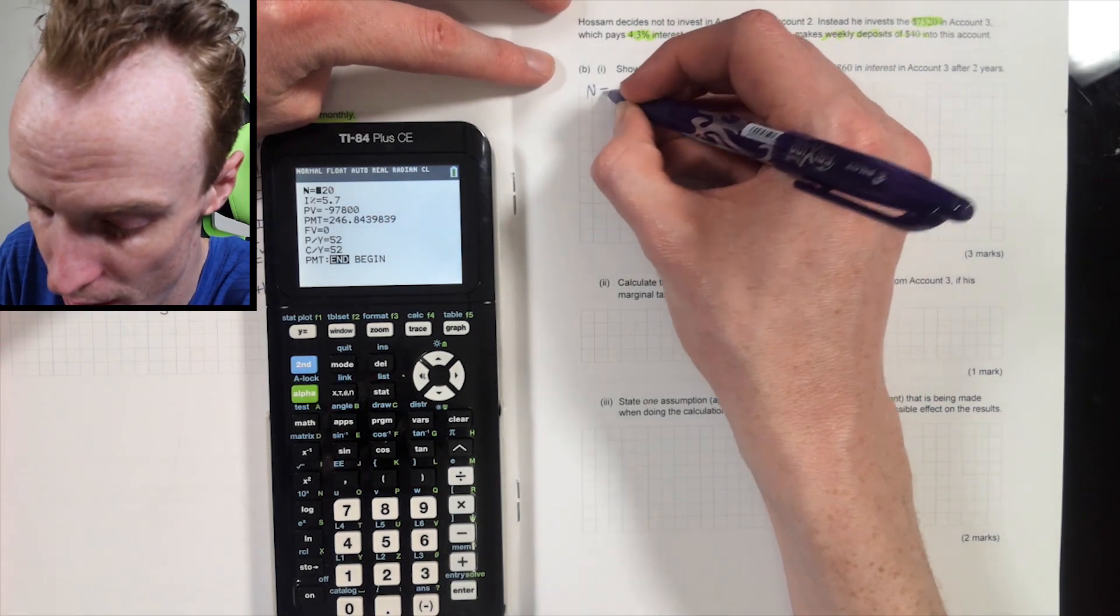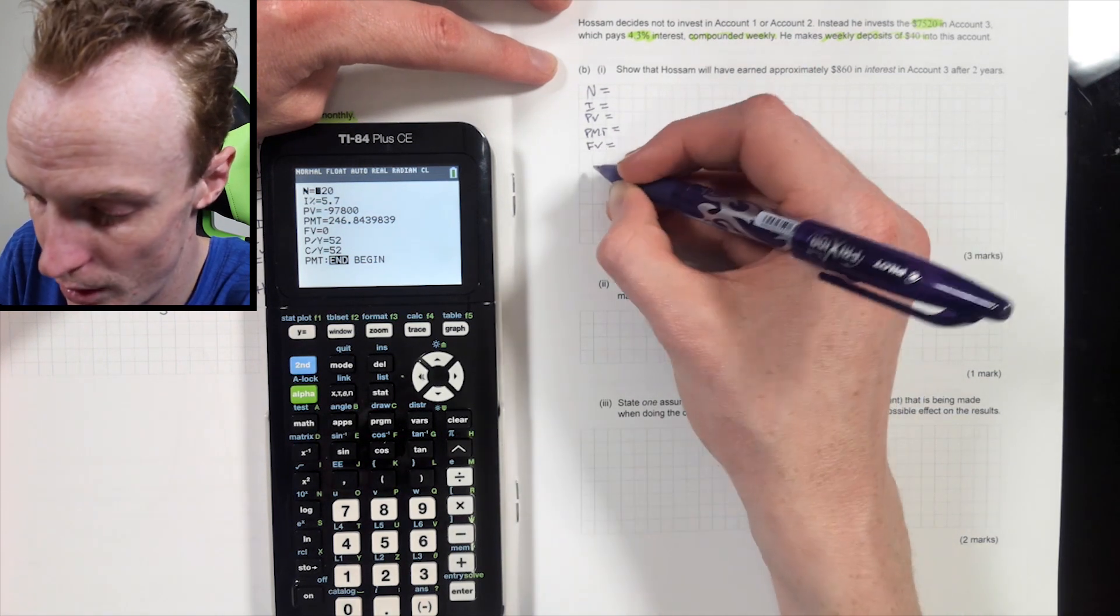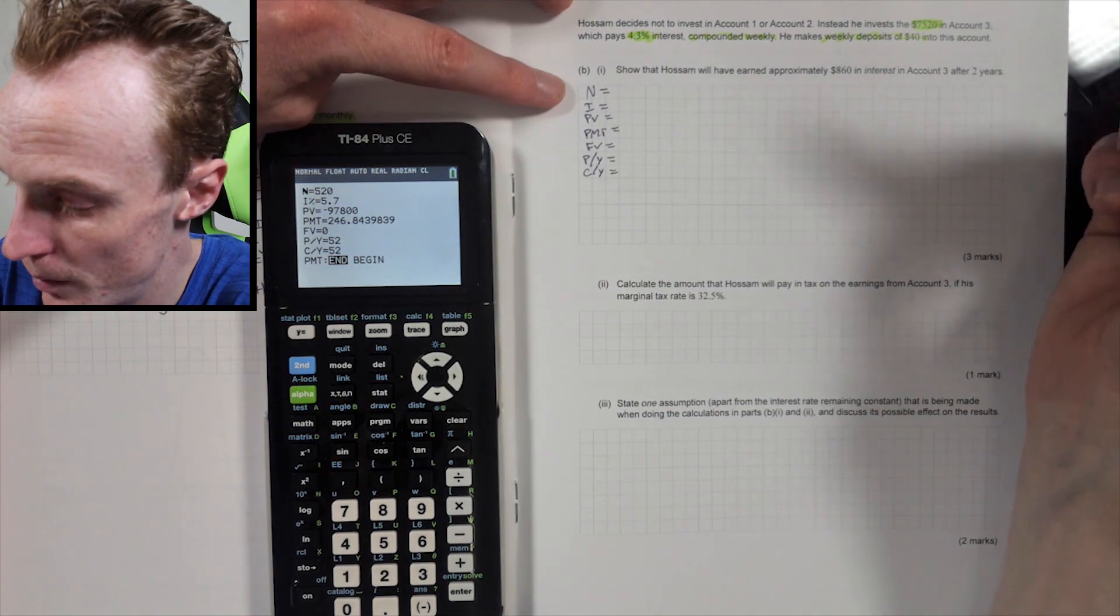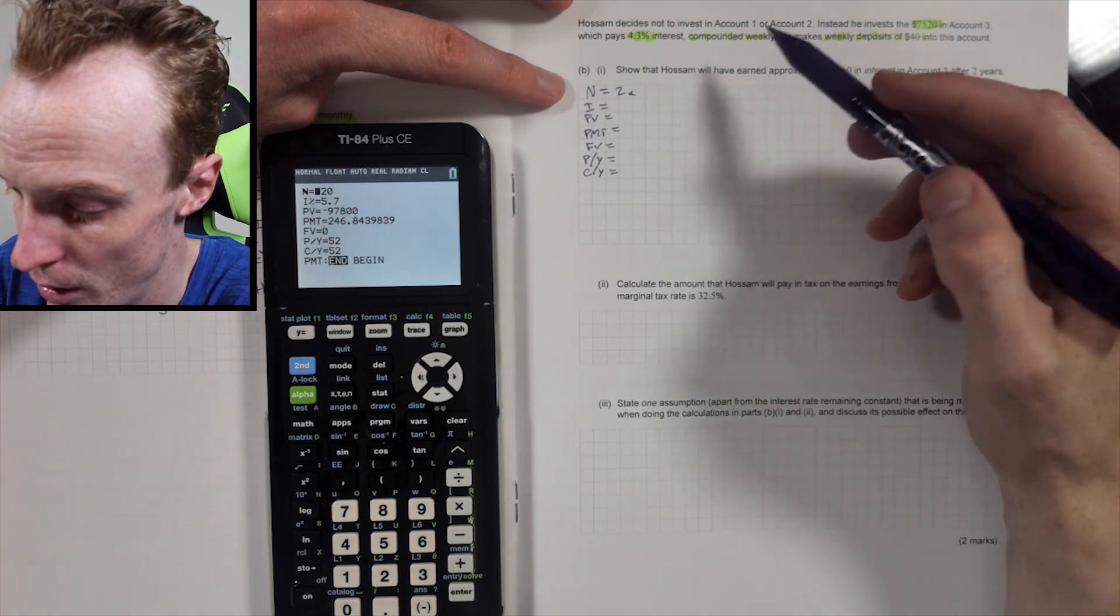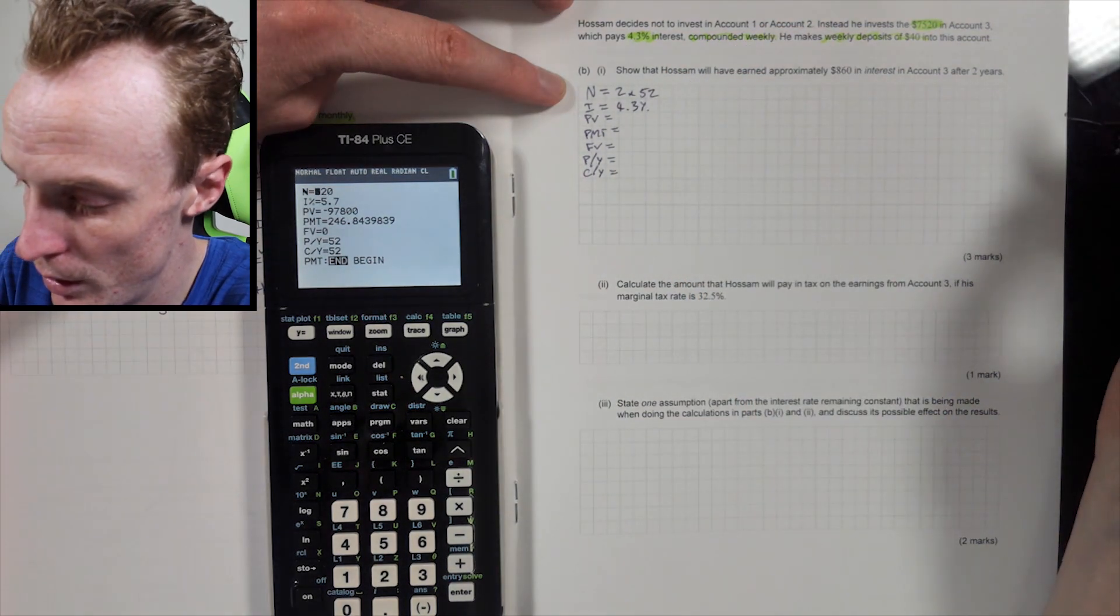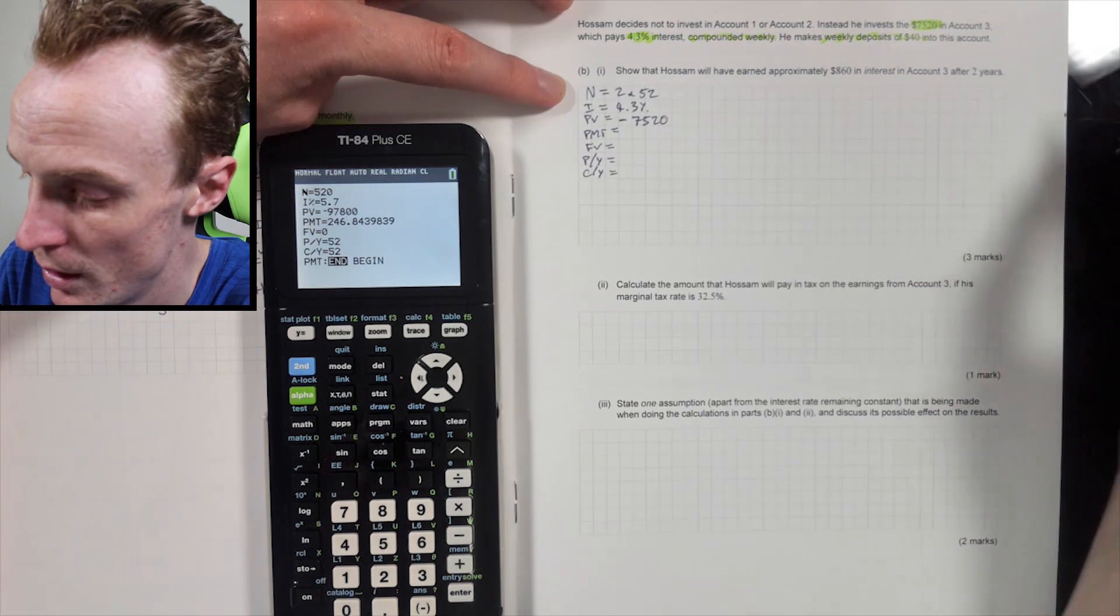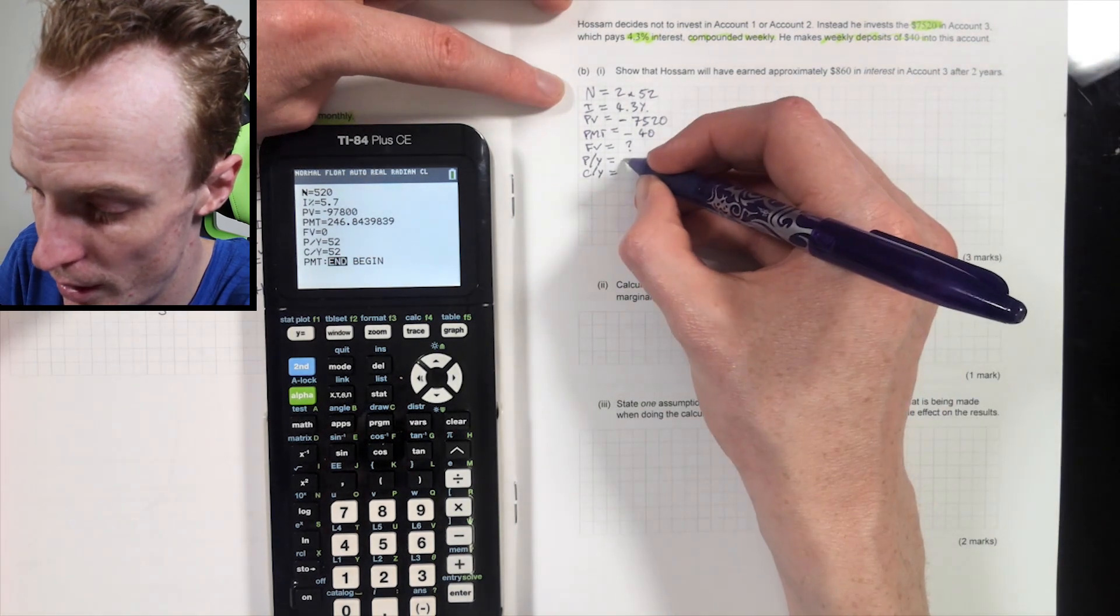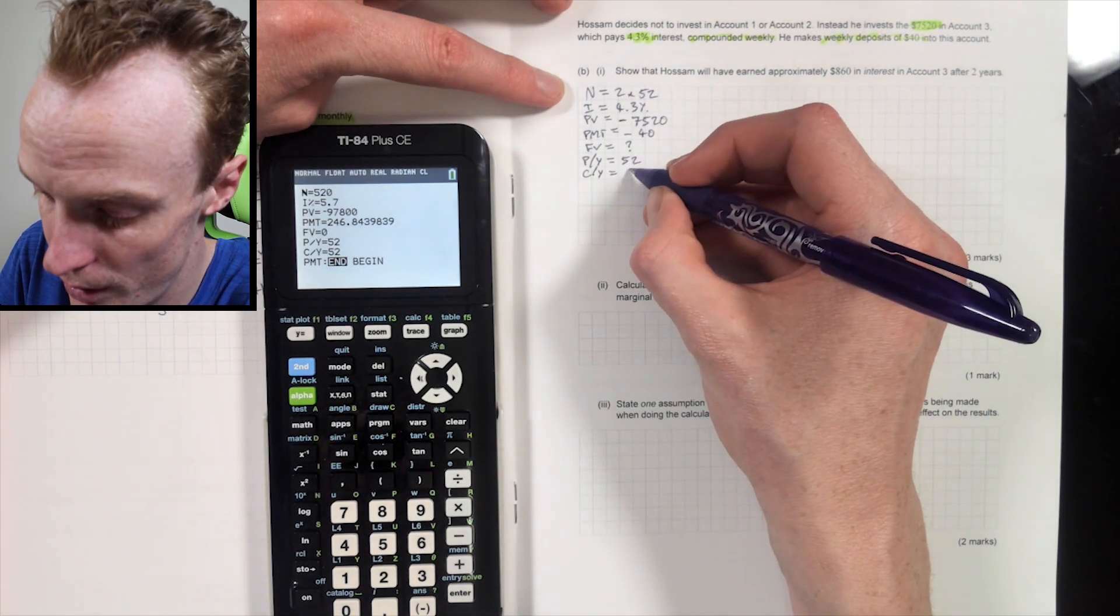So this is the N, the I, the PV, the PMT, the FV, the P/Y, and the C/Y. Now my N still two years, isn't it? Yeah, two years. So we two multiply by how often is this compounding compounded weekly. So it's 52. The interest rate is 4.3%. My present value is 7,520. It'll be a negative here because I'm putting into the account. So 7,520, my PMT will be negative 40 because I'm also putting that in. My future value, that's what I'm calculating. My P/Y is weekly. So 52 and I'm putting this weekly, aren't I? Yep. And C/Y is also weekly. So that'd be 52.